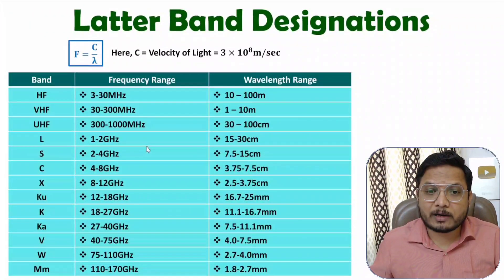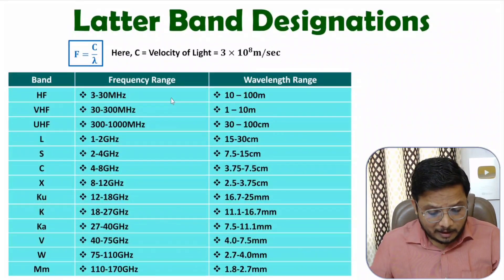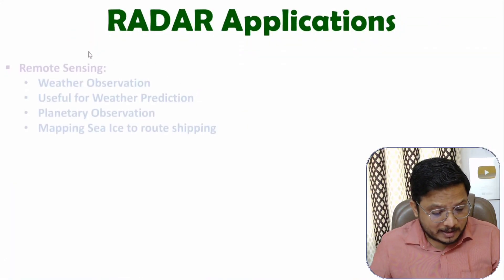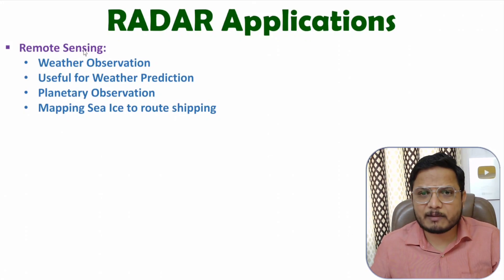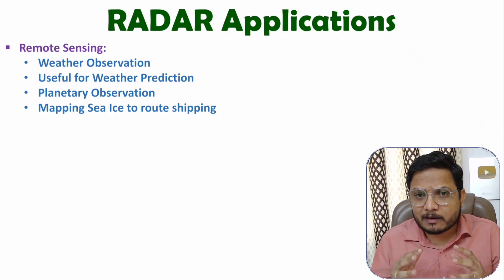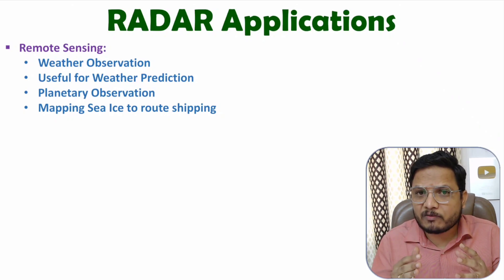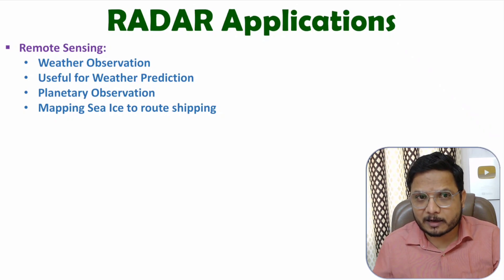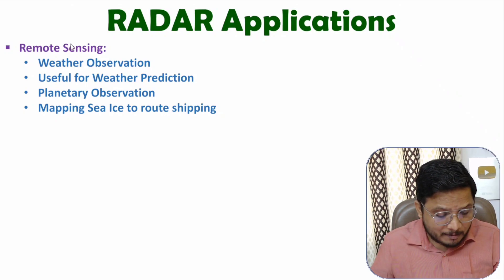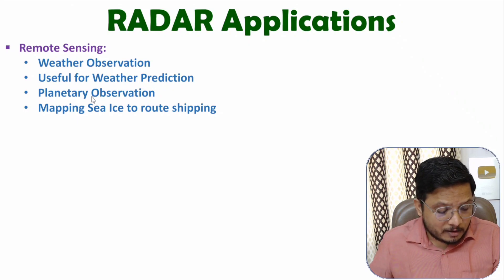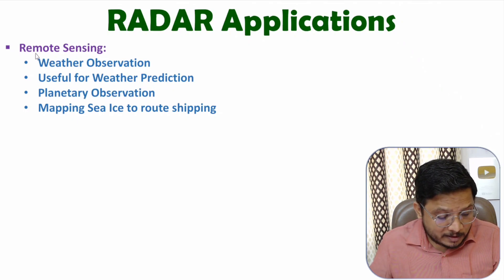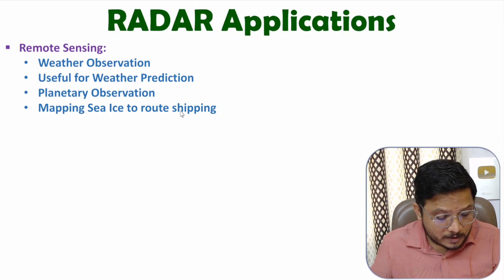Now I will be discussing the applications of radar. The first application is remote sensing. Remote sensing is associated with weather conditions, and with the use of radar, weather monitoring, weather observation, and weather prediction can be done. There are many remote sensing applications: weather observation, weather prediction, planetary observation, as well as mapping of ice to route shipping.